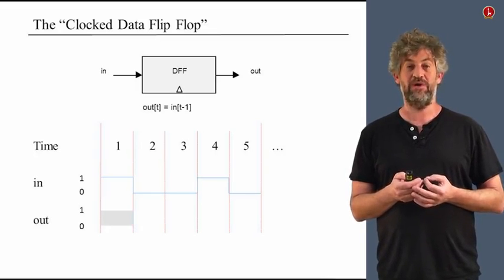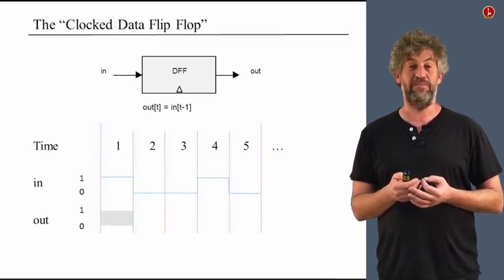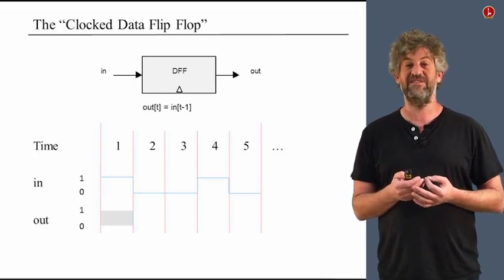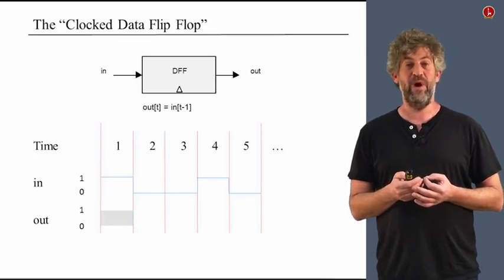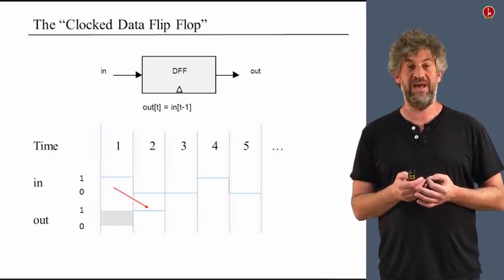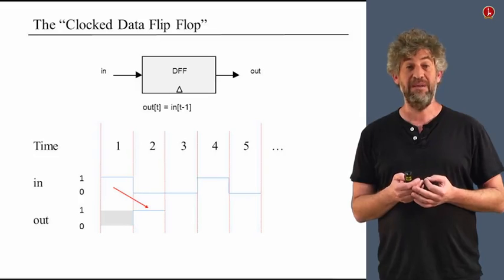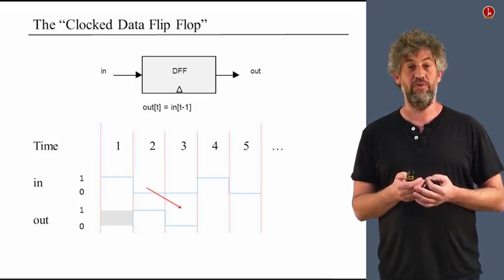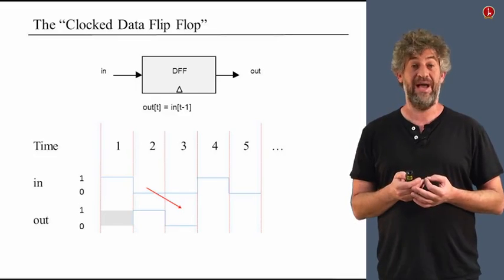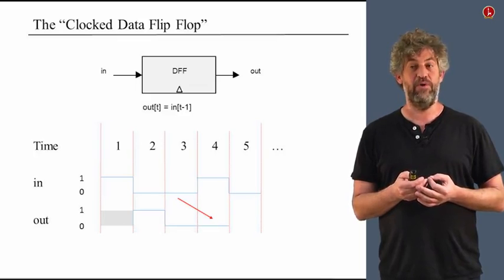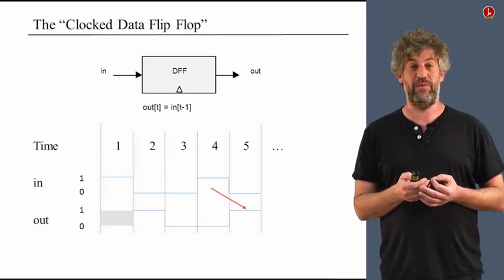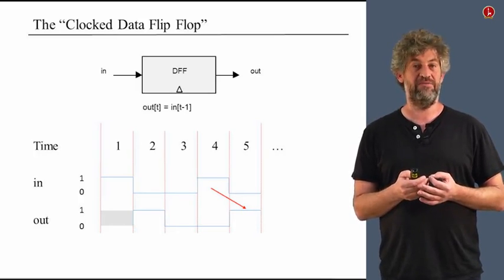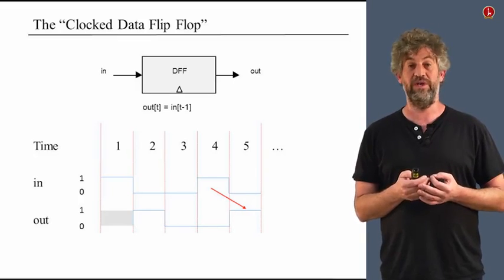At time one, we don't exactly know what the output will be because we haven't specified what happened in the previous time unit — so it's gray. But at time unit two, we know exactly what the output needs to be: it needs to be what the input was at time one. Similarly, at time unit three, we know it has to be zero because that was the input at time two. At every time point, we simply have the previous input signal shifted one time unit to the right. This is what the clocked D flip-flop does.